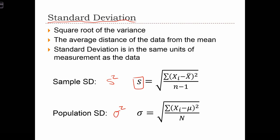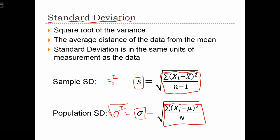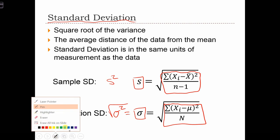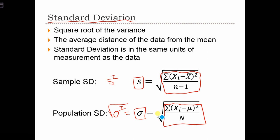Similarly, we had sigma squared as the population variance. When we take the square root of sigma squared, we get sigma. If you look at the equations for the standard deviation, all we're doing is taking the variance equations — which are inside these red squares — and square rooting them. We can calculate the sample variance and square root it to get the sample standard deviation.